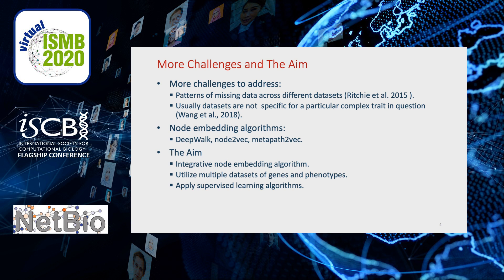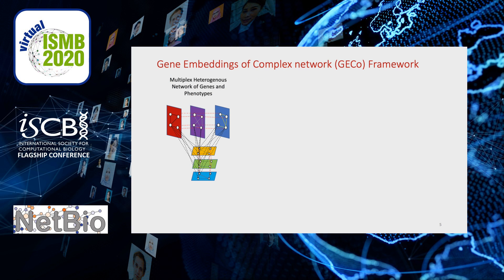Therefore, we aim to develop an integrative node embedding algorithm to classify disease genes, which can utilize multilayered complex network structures of genes and phenotypes. At the end, we can apply a supervised learning algorithm to the gene embeddings to predict disease-related genes. To this end, we develop Gecko to generate the gene embeddings of a complex network of genes and phenotypes.